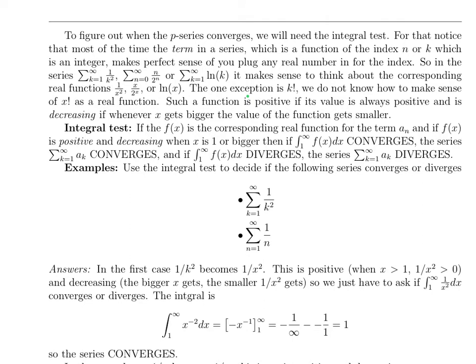So we want you to notice that when you have an expression inside a series, the term is a function of n or of k. If we just stick an x in there instead, so 1 over k squared becomes 1 over x squared, n over 2 to the n becomes x over 2 to the x, ln of k becomes ln of x. Now you can think of it as a function of any real number.